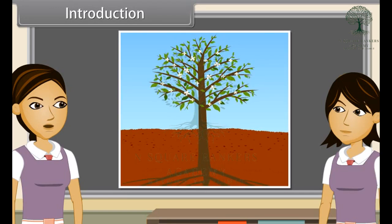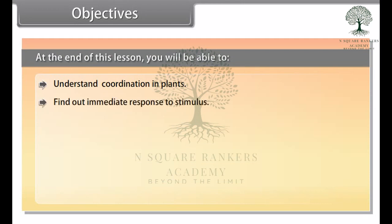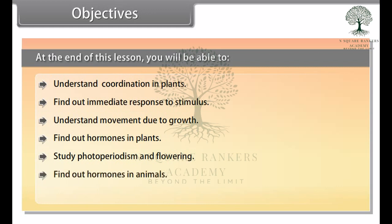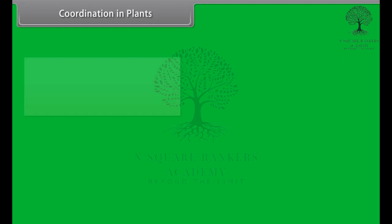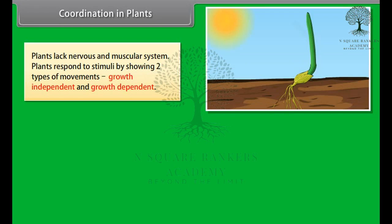Plants respond to various stimuli very slowly by growing. At the end of this lesson, you will be able to understand coordination in plants, find out immediate response to stimulus, understand movement due to growth, and find out hormones in plants. Plants lack a nervous and muscular system and respond to stimuli by showing two types of movements: growth-independent and growth-dependent.